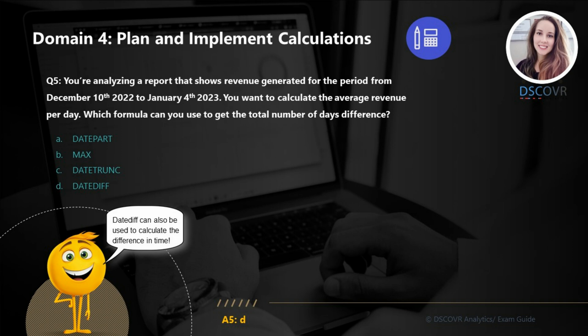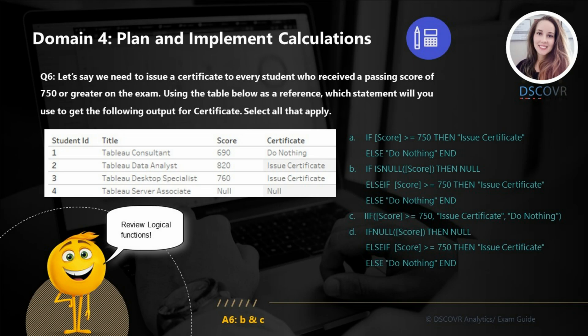For question number five, let's say you're analyzing a report that shows revenue generated for the period from December 10th to January 4th, and you want to calculate the average revenue per day. Which formula can you use to get the total number of days difference? The answer is D — you're going to use the DATEDIFF function, which can also be used to calculate the time difference in seconds, minutes, and hours.